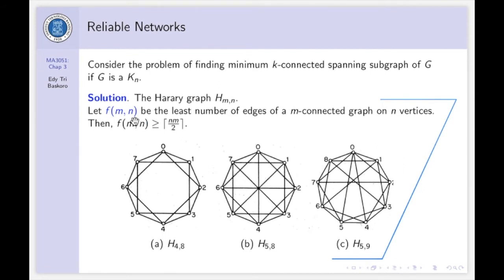Let F be the least number of edges of a M-connected graph on N vertices. Since the graph is M-connected, then the minimum degree of the graph is at least M. So, the number of edges must be at least the ceiling of M times N over 2. Thus, we have the function F(M, N) at least this number. And Harary provides a M-connected graph on N vertices with the number of edges exactly this number.